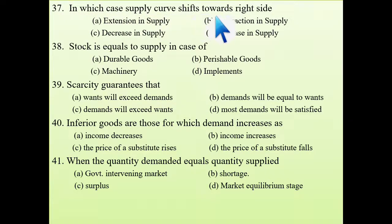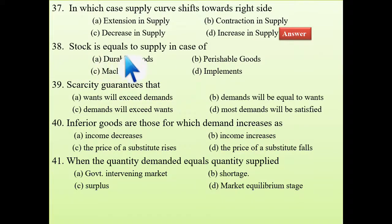Next: in which case does the supply curve shift toward the right side? A shift to the right means an increase in supply. Next: stock equals supply in the case of perishable goods, because with perishable goods we cannot stock them for a long period — whatever stock we have must be supplied immediately or it will rot. In the case of durable goods, stock does not equal supply.